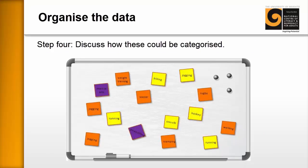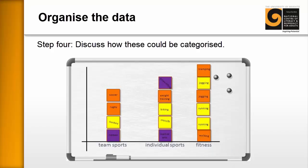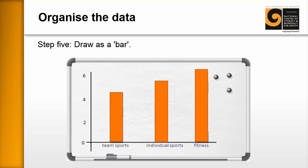Organizing the Data. Once the learners have written their physical activities on the sticky notes and put them on the whiteboard, the next activity — probably the hardest part — is looking at how we can organize the data into subsets. In a class I ran, learners suggested breaking them into team sports, individual sports, and general fitness. You let the learners take the post-its and arrange them into a bar graph by drawing the axes and categories on the board.